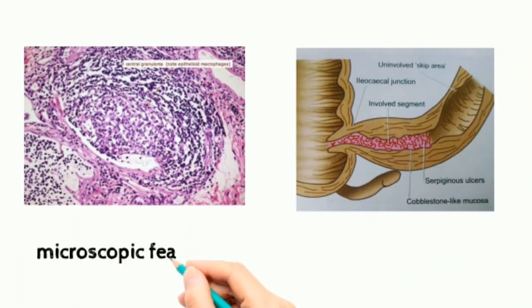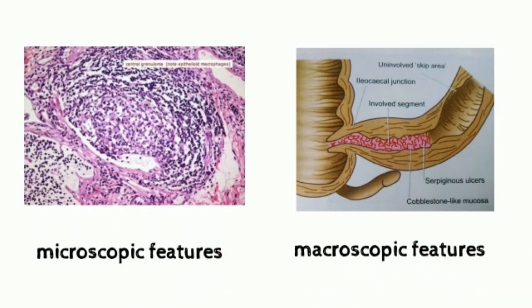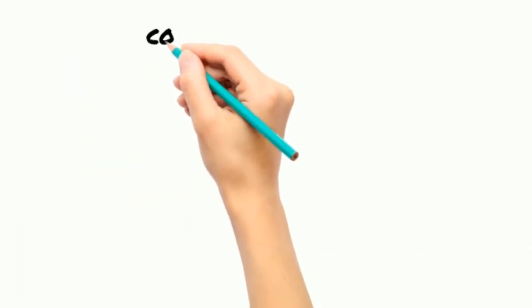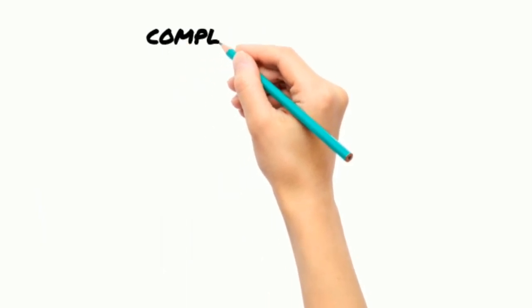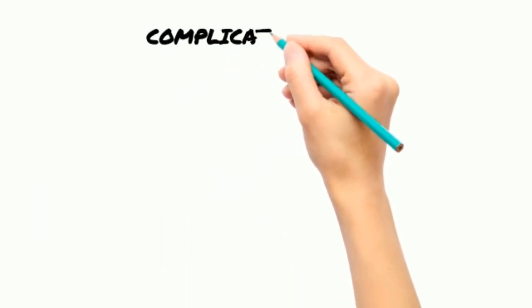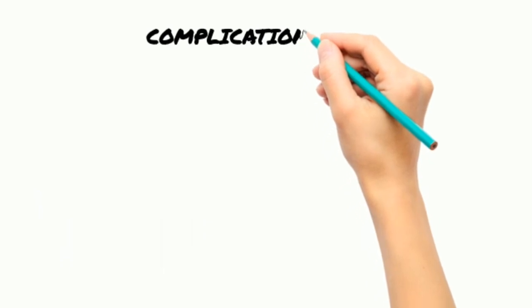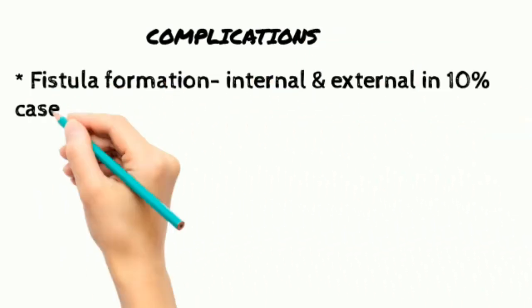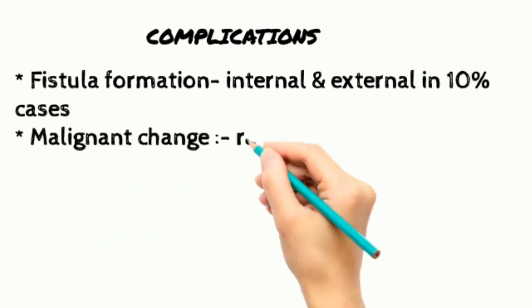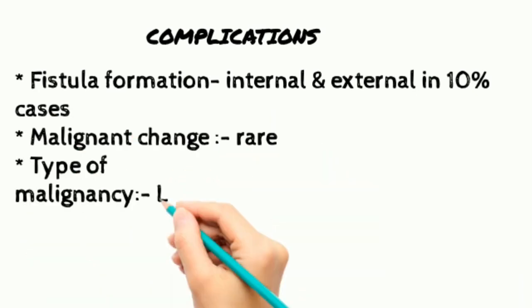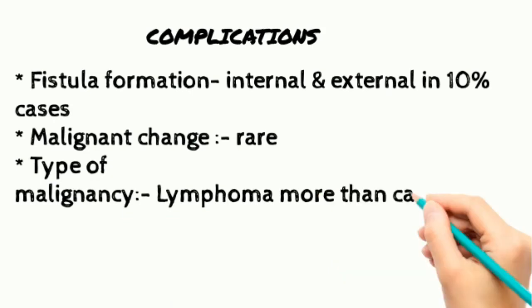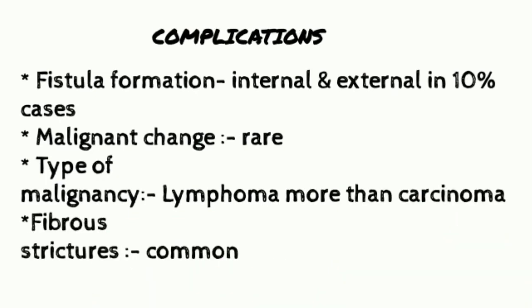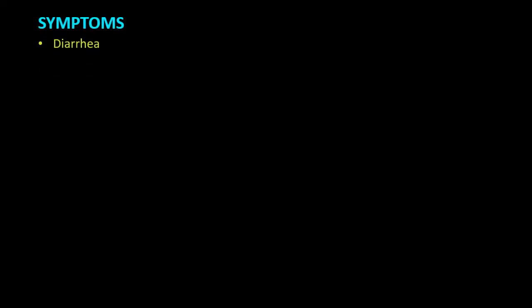These are the microscopic and macroscopic features. Regarding complications: fistula formation, both internal and external, occurs in 10 percent of cases. Malignant change is rare; the type of malignancy is lymphoma more than sarcoma. Fibrous strictures are common.